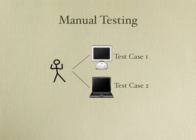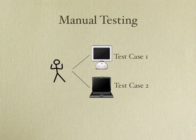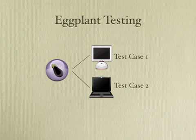In a manual testing environment, a human operator interacts with one or more systems, performing a variety of tasks to validate that the system under test is responding as it should. In the Eggplant environment, Eggplant scripts automate that process. Eggplant can perform tests and report results faster, more consistently, and more reliably than a human operator, and is available 24 hours a day without any overtime pay.